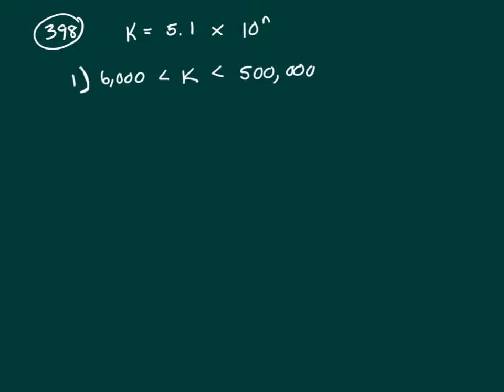We know that n is a positive integer, so that means k is going to be larger than 5.1. It's going to be a big number, not a little number. And we're trying to figure out what the value of k is.